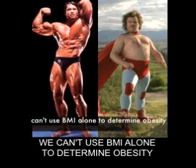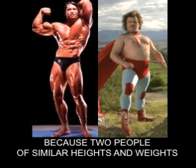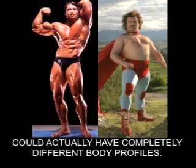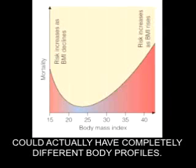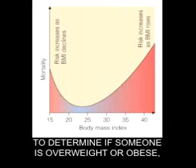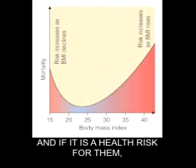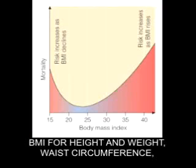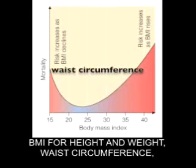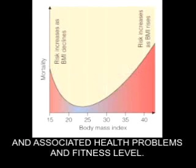We can't use BMI alone to determine obesity because two people of similar heights and weights could have completely different body profiles. To determine if someone is overweight or obese, and if it is a health risk for them, we need to look at BMI (height and weight), waist circumference, associated health problems, and fitness level.